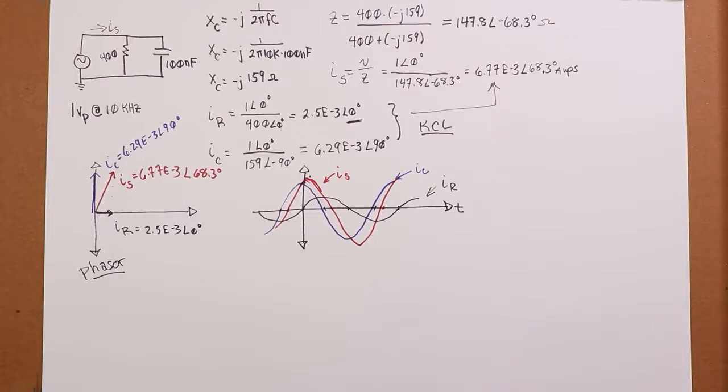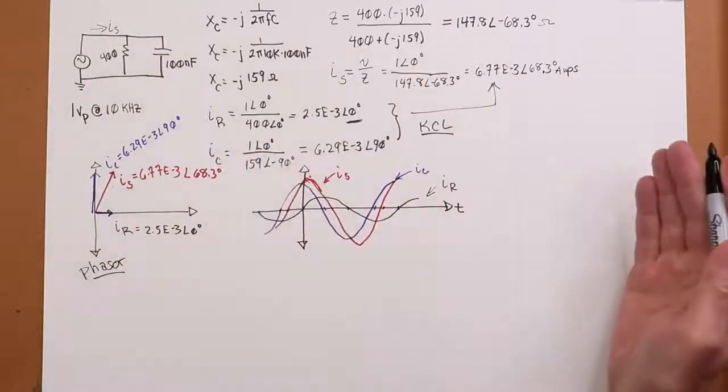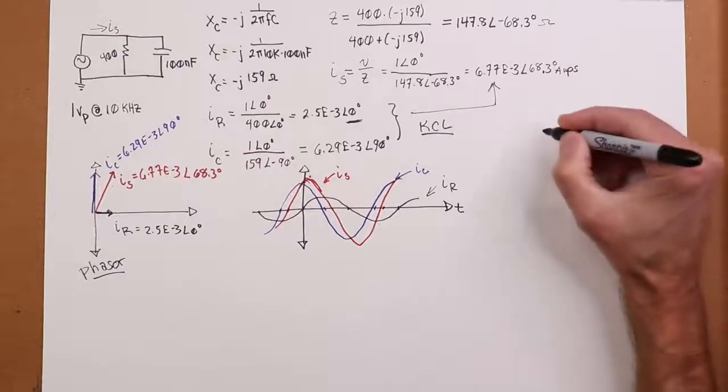Okay. Now, next question. What if we have an RLC circuit? In other words, I have the three components. How does that change?